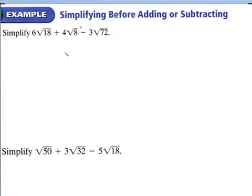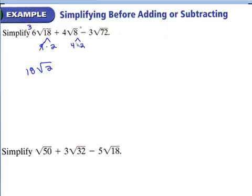With the problem as is, these are not like terms right now because you have different radicands. But you should recognize that you can simplify the radicands further. So 18 is 9 times 2, and the square root of 9 is 3, giving 3 times 6... For 72, that's 2 times 36, and the square root of 36 gives a coefficient.